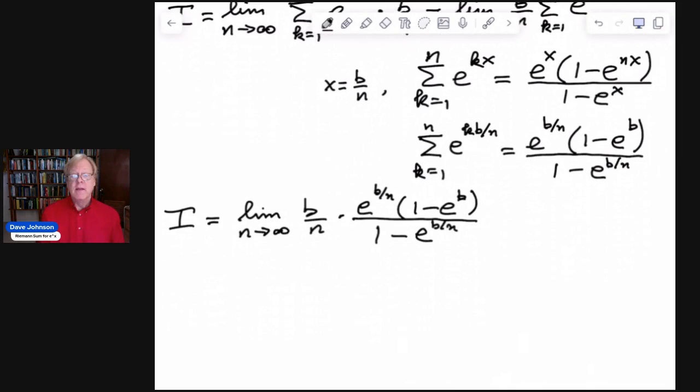And this is where we need to think about how to do the limit. Now let's just, we always need to step back from these problems, just take a bird's eye view and see what's going on. Well, as n goes to infinity, b over n is going to go to zero. And this is going to be e to the zero, which is 1, times 1 minus e to the b. And then downstairs, e to the zero is 1, so 1 minus 1 is 0. So we get 0 divided by 0. Now we could just go ahead and do L'Hopital on this, but I think it's going to be easier if we do a little change of variables to make it look nicer.